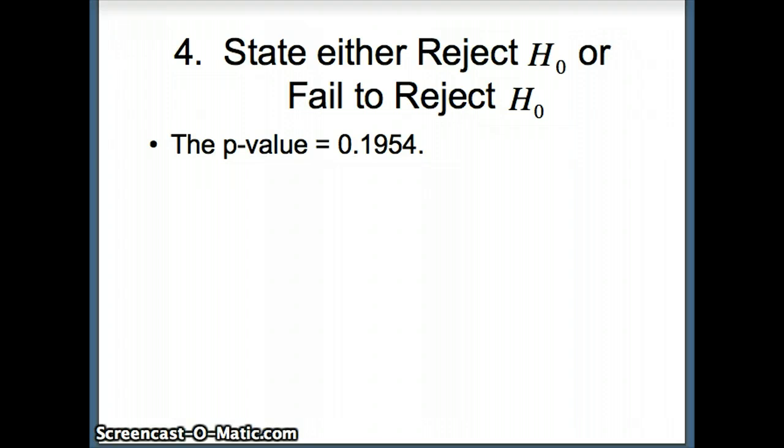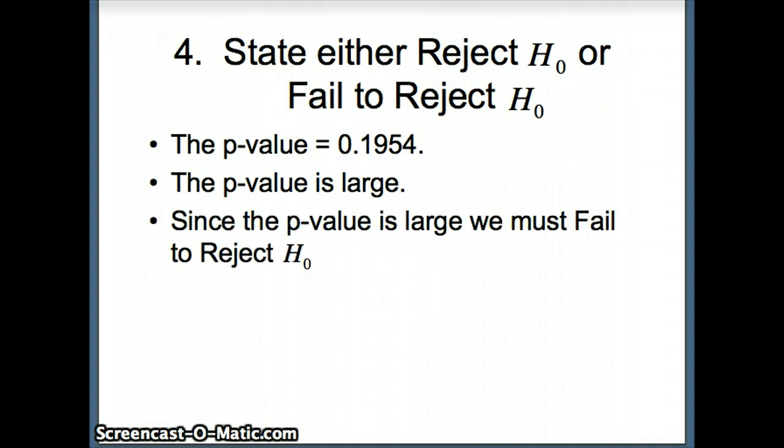Now we either reject H naught or fail to reject H naught. Our p-value is 0.1954. That's a large p-value. Remember, we say a p-value is large if it's greater than 0.05, small if it's less than 0.05. The p-value is large relative to 0.05, so we fail to reject H naught.